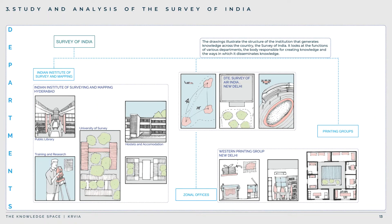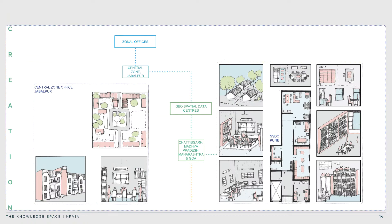The institution studied in detail is the Survey of India, the first formalized institution that uses cartography as a tool to administer and manage resources and people. The organization has three broad departments: the Indian Institute of Survey and Mapping, Zonal Offices, and Printing Groups. The Directorate of Air is a separate department under defense. The ISM in Hyderabad is the only institute in the country with a public library. The Directorate is non-accessible by the public, and the printing groups, though supposedly accessible, are made private in nature.